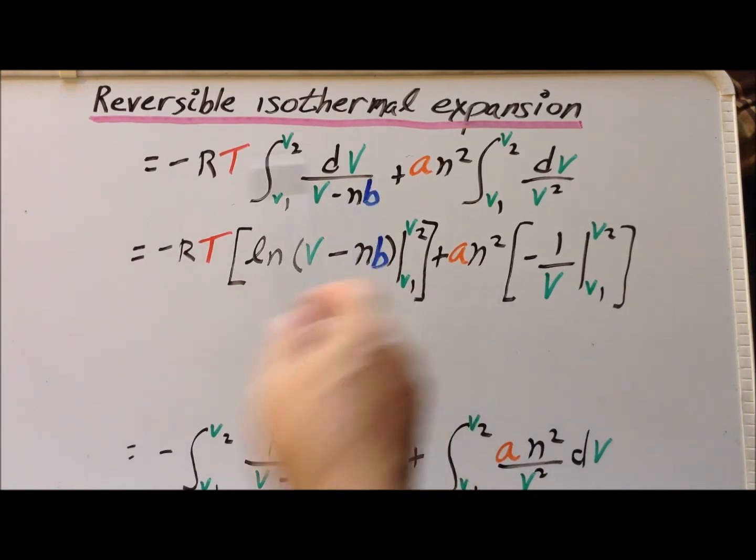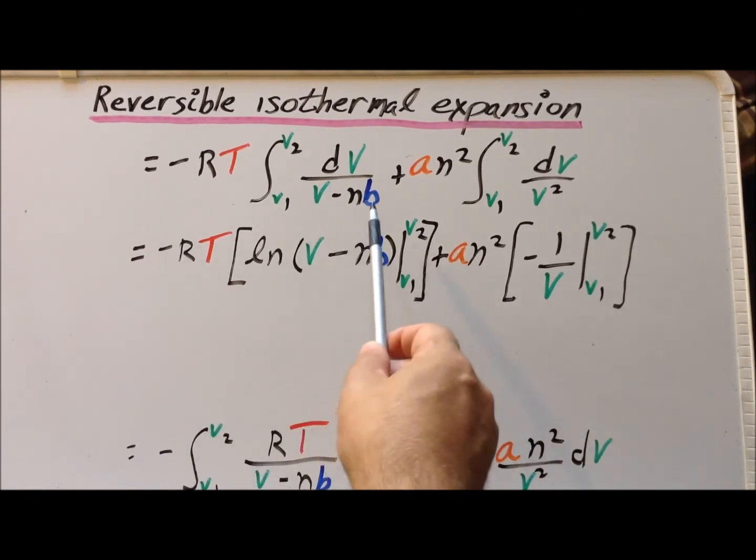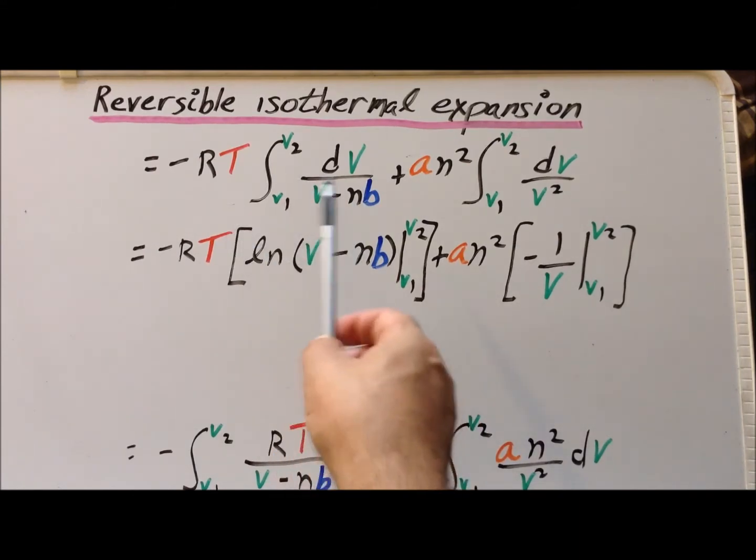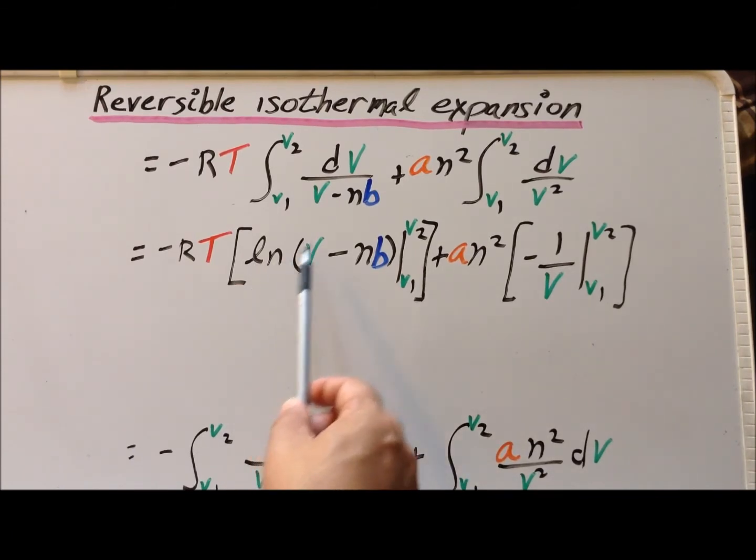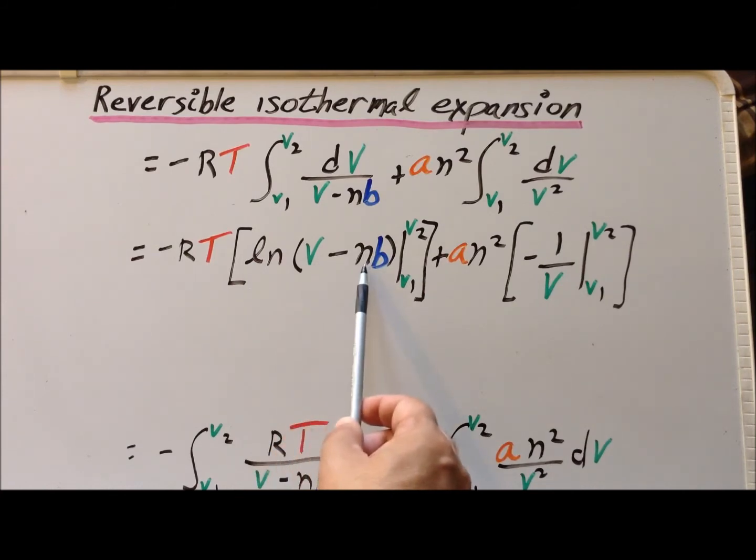For the first integral, we realize that V minus NB is simply a function U. dU would simply be dV in that case. So this is equivalent to the integral of dU over U. We recognize that the antiderivative is going to be the natural log. So the antiderivative here is going to be the natural log of V minus NB.